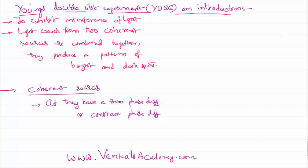Each time when they are emitting, they shall have a constant phase difference. If that is the case, we can call these two sources coherent. But the catch here is that two different sources cannot be coherent.